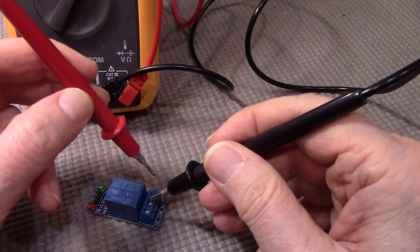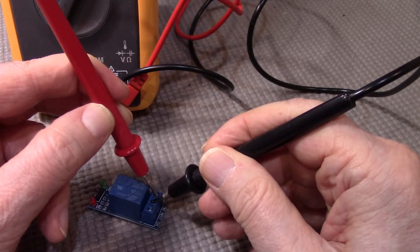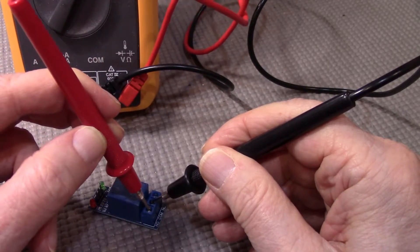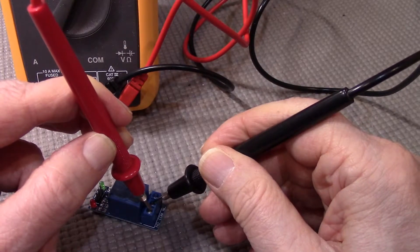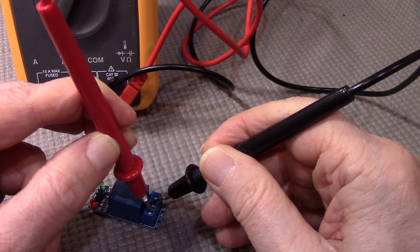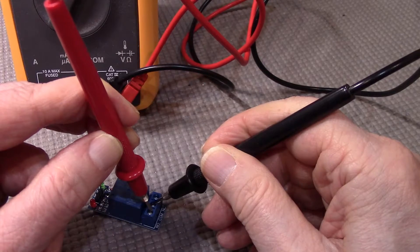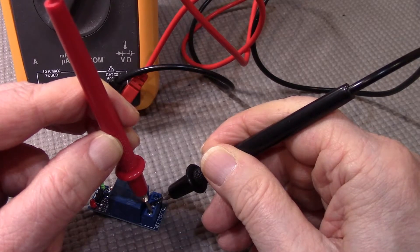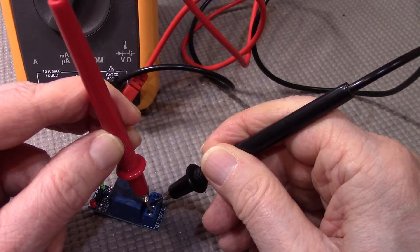If I check the normally closed terminals on the relay, I'll see that they're connected. But if I check the normally open terminals, they're not connected. However, we can activate the coil inside the relay to close the normally open contacts, in which case we can use it to control a lamp or a DC motor, for example.